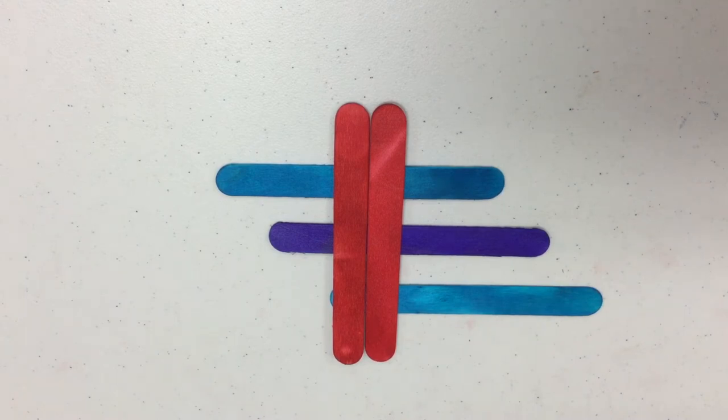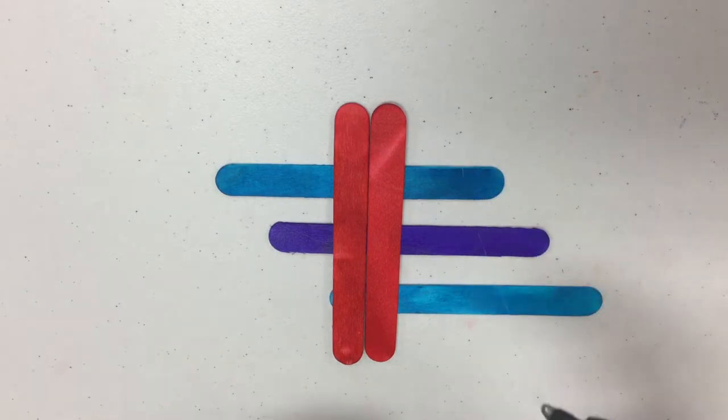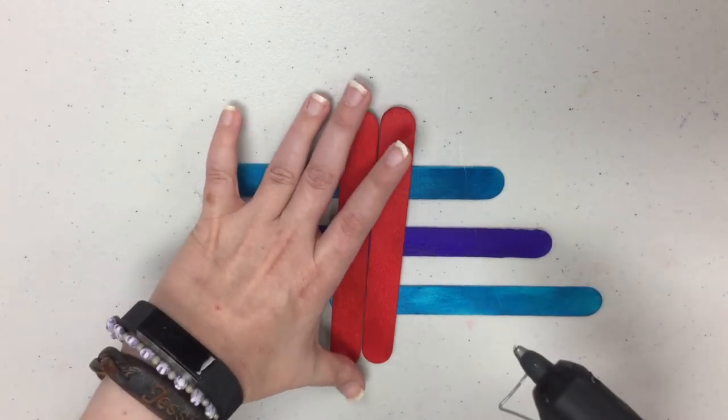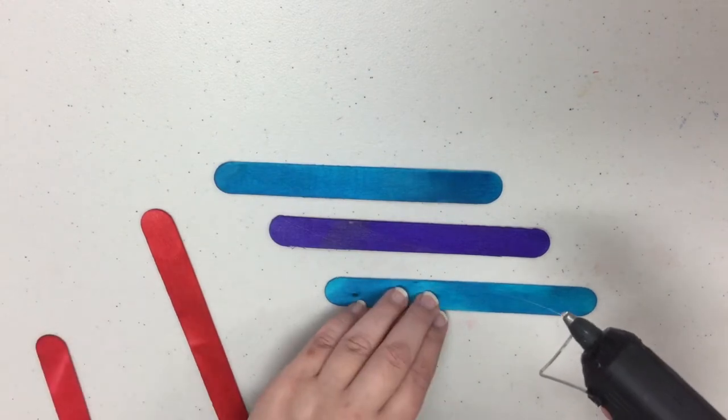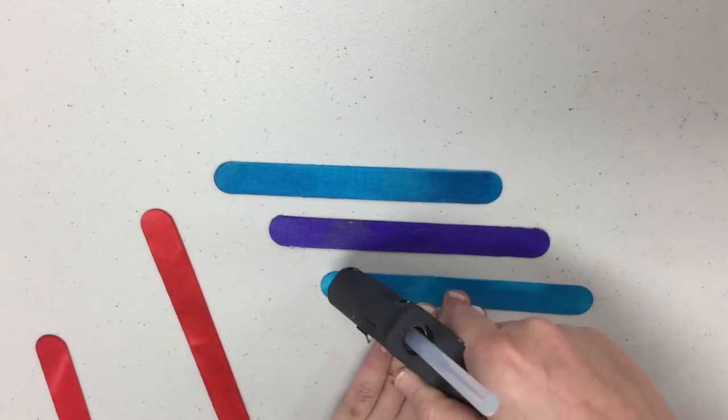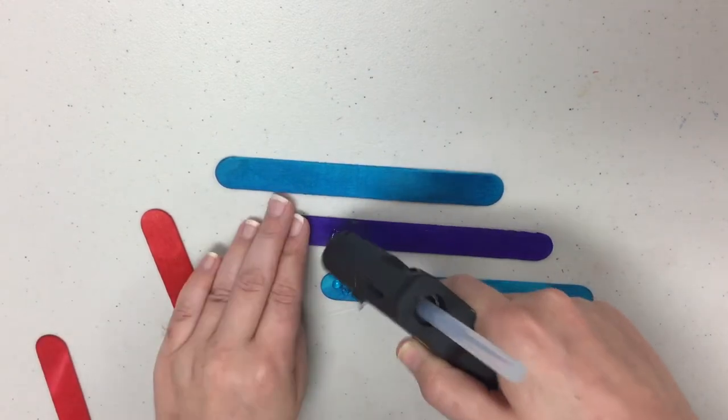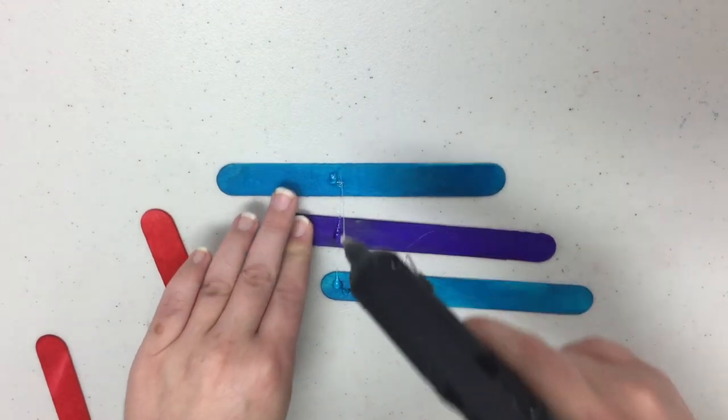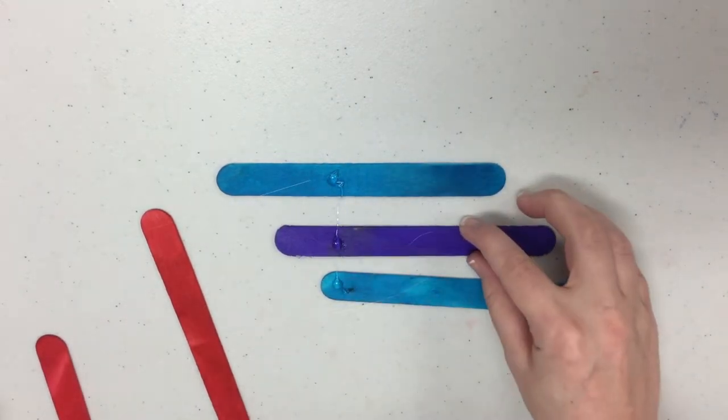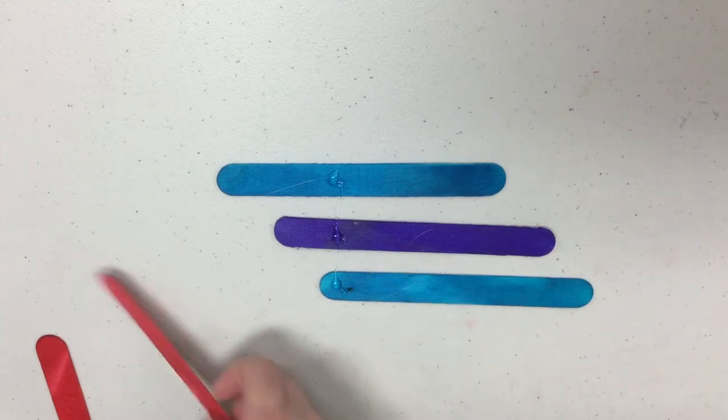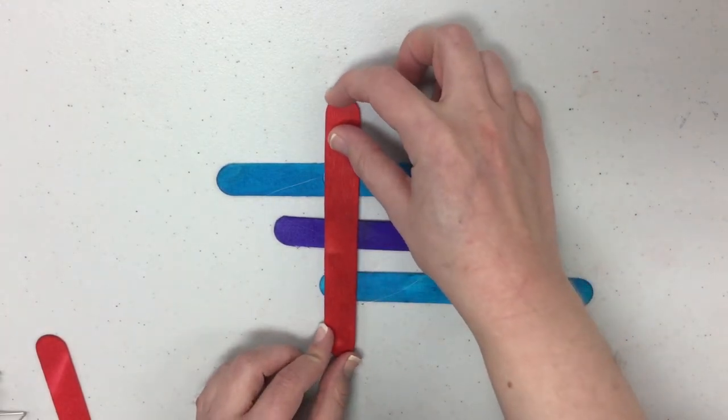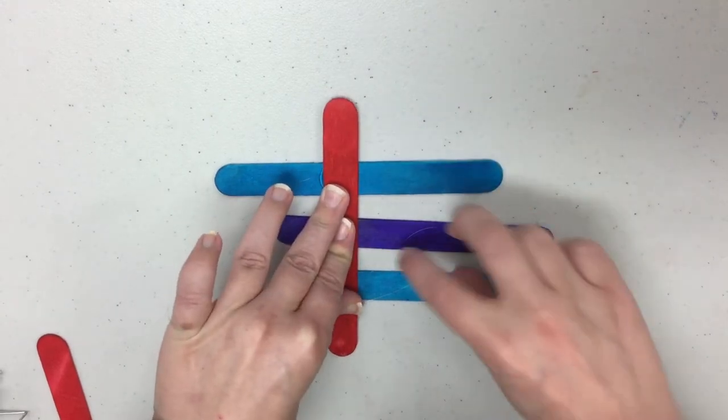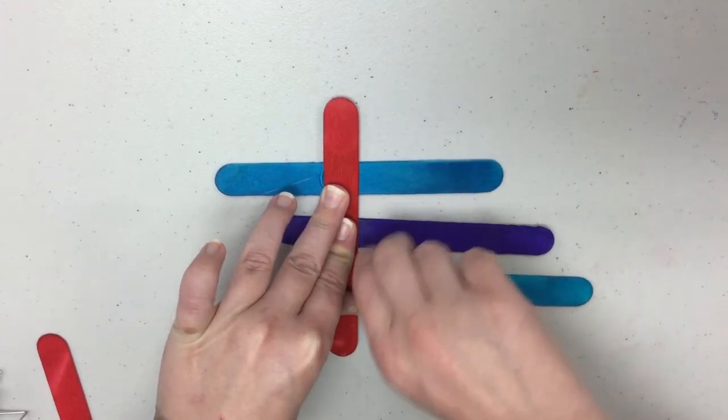Now you're going to want your parents help and that hot glue gun because you're gonna pick up these two craft sticks right here and you're going to put some small dots of glue on each of these three craft sticks. Make sure they're nice and straight the way they were and lay back down your craft stick just like that.